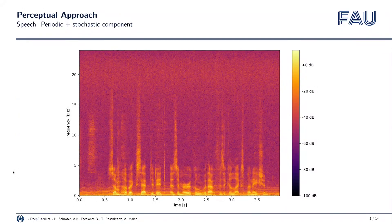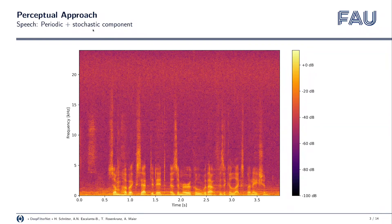So what do we mean by the perceptual approach? We assume a speech model that consists of a periodic and a stochastic component. We want to have two stages in our framework: the first one enhances only the speech envelope, and the second stage then focuses on enhancing the periodic part of speech.